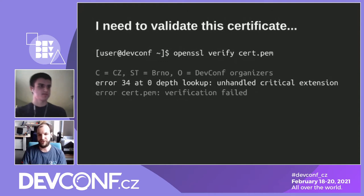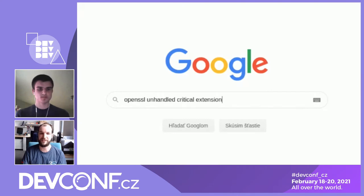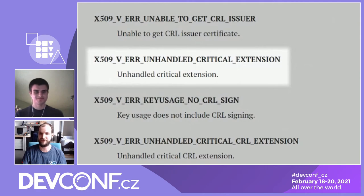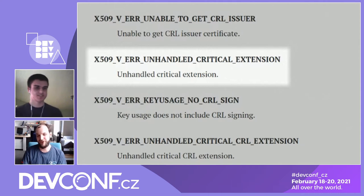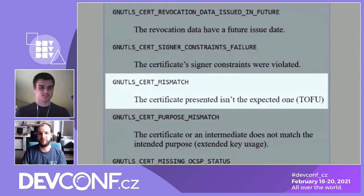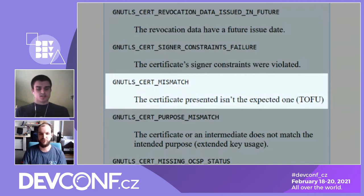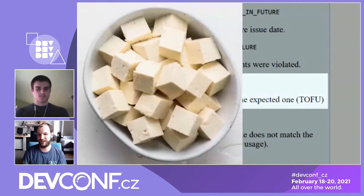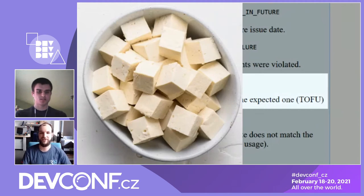We have Google for that. So Googling 'unhandled critical extension OpenSSL' — what do we learn? Well, unhandled critical extension. That wasn't particularly helpful. But I don't want to be picking on OpenSSL because other libraries are not ideal either. For example, BlueTLS has an error saying 'the certificate presented isn't the one that you expected, tofu.' And it doesn't mean this kind of tofu. So again, you're left wondering what tofu means if it's not the piece of food.